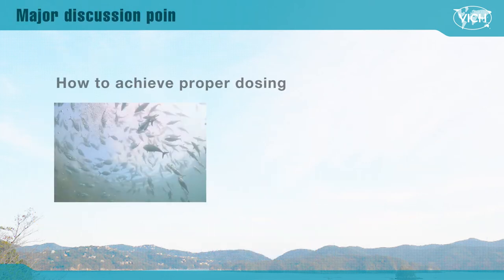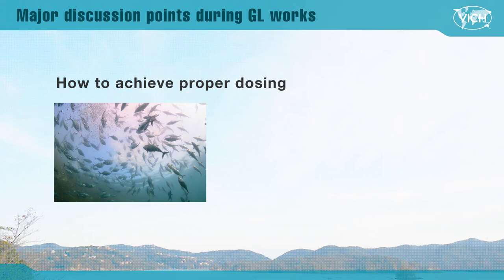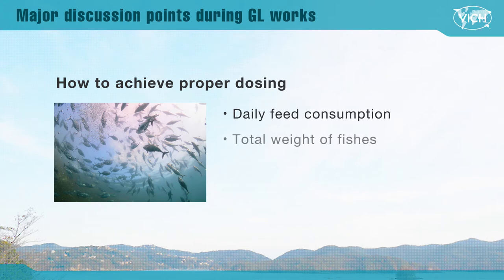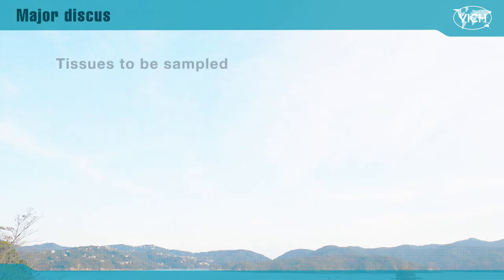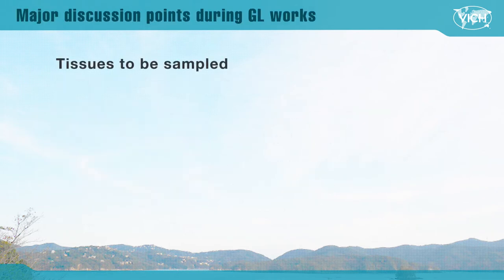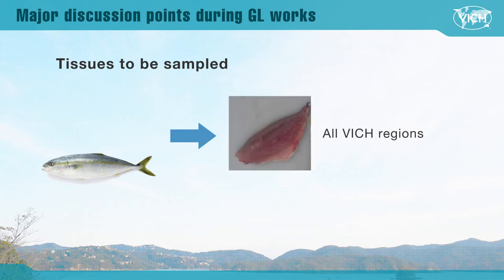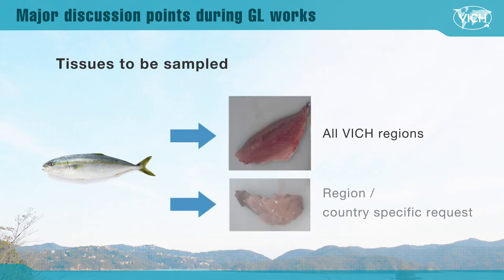Another point discussed was proper administration. It is important to calculate the actual dose based on daily feed consumption, total weight of fish, intended dose, and feed remaining after dosing. The tissues to be sampled was also discussed, considering that in some countries parts of the offal are eaten. Thus, it was determined to separate common tissues — that is, muscle — and regional or country-specific tissues, including various offal such as the liver, heart, ovaries, or testicles.